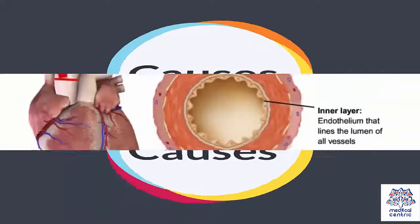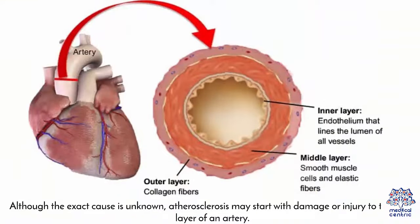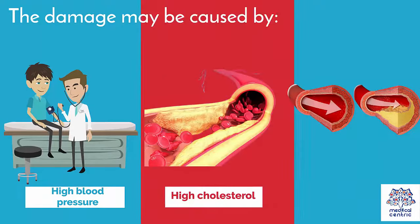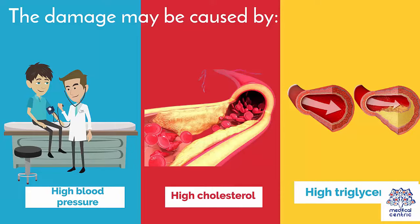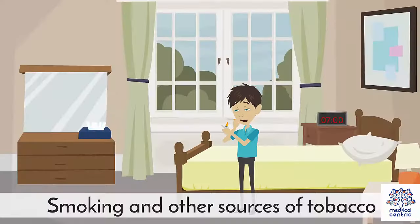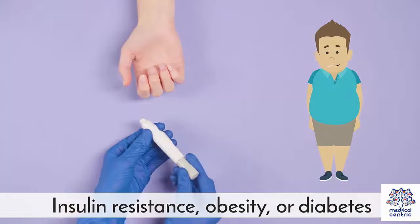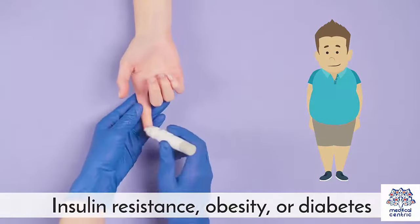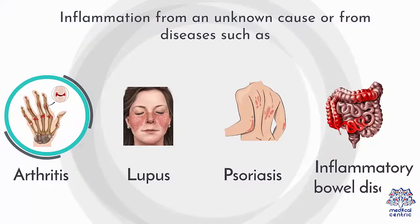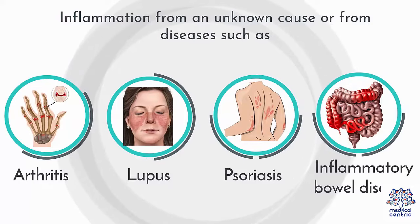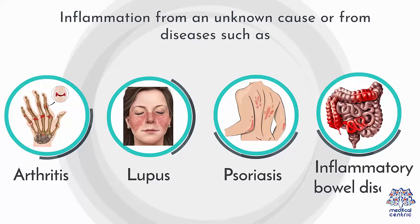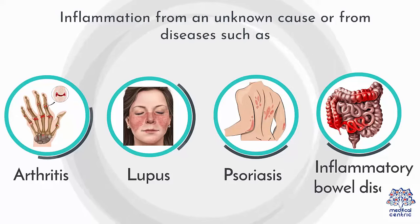Although the exact cause is unknown, atherosclerosis may start with damage or injury to the inner layer of an artery. The damage may be caused by high blood pressure, high cholesterol, high triglycerides (a type of fat or lipid in your blood), smoking and other sources of tobacco, insulin resistance, obesity or diabetes, or inflammation from diseases such as arthritis, lupus, psoriasis, or inflammatory bowel disease.